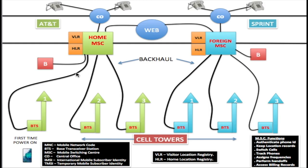Along with the call, the MSC sends two frequencies to the base station — one to transmit from the base station to the phone, and one to transmit from the phone back to the base station. These frequencies are used for the talk path once the call is answered, until the customer terminates the call. When the call is terminated, those frequencies are freed up and the MSC can reassign them to another customer's call.